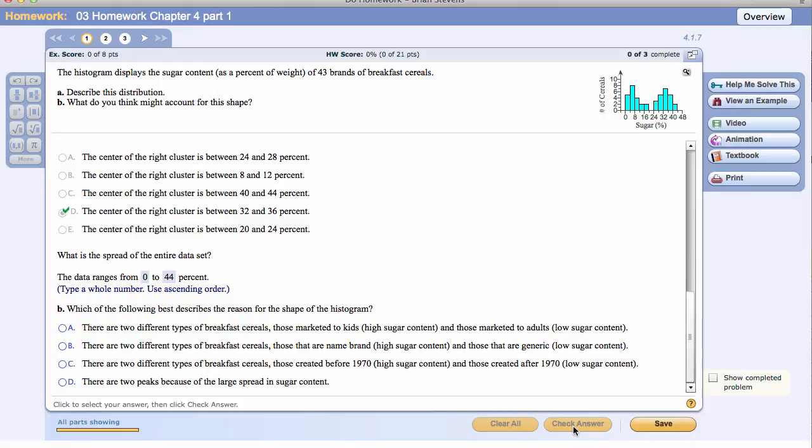Which of the following best describes the reason for the shape of the histogram? Well, there's obviously two different types here. And to me it seems like there are ones marketed to kids and there are those marketed to adults.